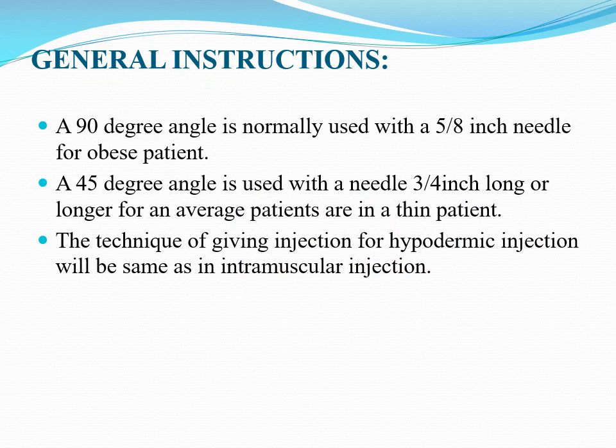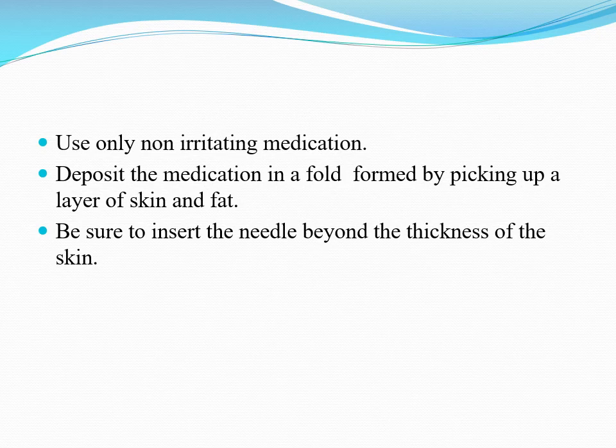General Instructions: A 90-degree angle is normally used with a 5/8-inch needle for obese patients. A 45-degree angle is used with a 3/4-inch needle for an average or thin patient. The technique of giving hypodermic injection is the same as intramuscular injection. Use only non-irritating medication. Deposit the medication in a skin fold by picking up a layer of skin and fat. Be sure to insert the needle beyond the thickness of the skin.